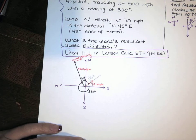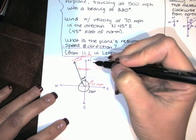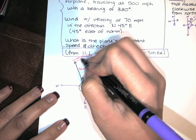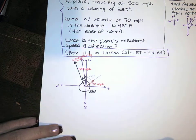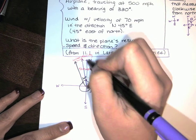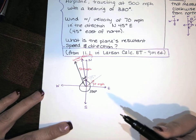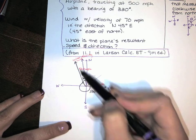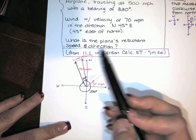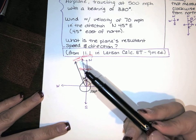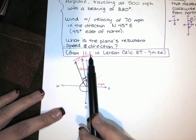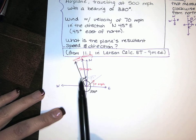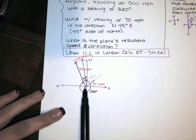From our studies of vector addition, it's this plus this. If I'm adding tip to tail, that's the resultant vector — that's my answer. But I want the plane's resultant speed and direction, not just a picture. So in order to get the resultant speed and direction, I need to write the wind velocity as a vector in component form, and then write the velocity of the plane without the wind in component form.